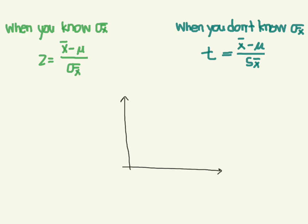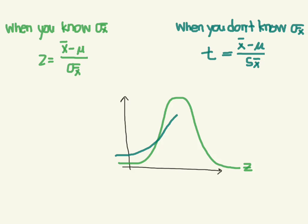Let's look at our standard z distribution, which is normal shaped. The t-distribution is an estimation of that — it's not going to be as exact, because we don't have the true standard error value. So this distribution is going to be more squished and spread out. There's more probability out at the periphery, and less clustered in the middle, because we're just making an estimate rather than using the exact value.